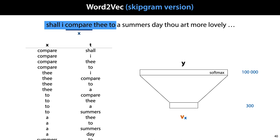If we have 100,000 words in our vocabulary, then we can think of this as a one-layer classification network with 100,000 classes and the embeddings as input features. We train both the embedding and the weights of the network together.